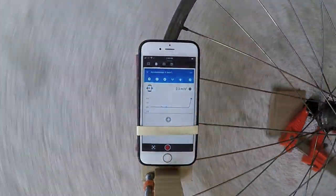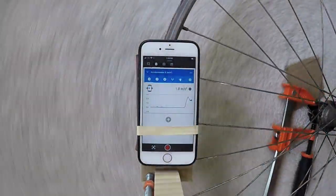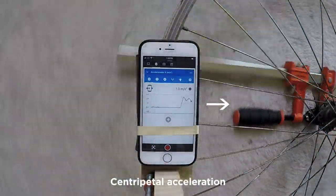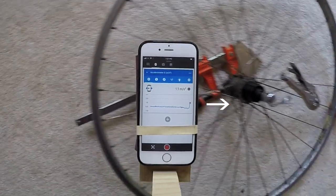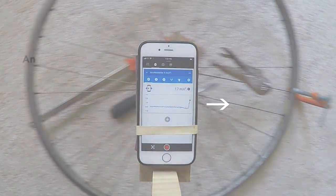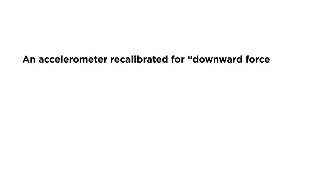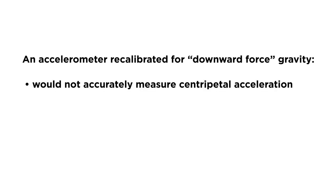But here's mine on a rotating wheel. It's correctly registering a centripetal acceleration in the positive x direction toward the center. An accelerometer recalibrated for downward force gravity would not accurately measure centripetal acceleration. So it would be pretty useless for an engineer. It would also be useless in deep space.